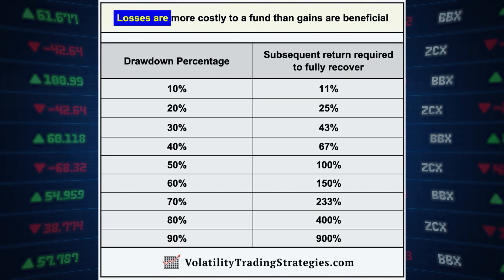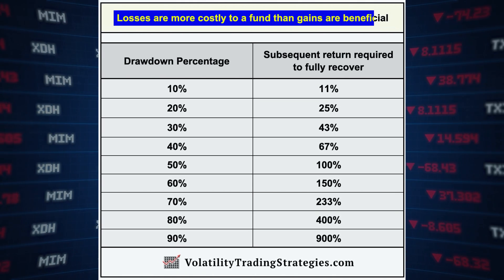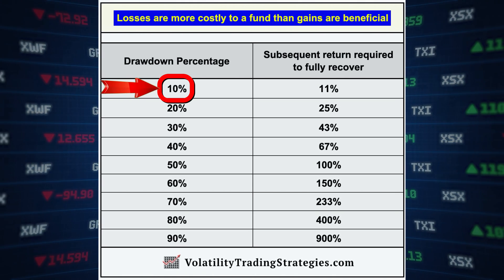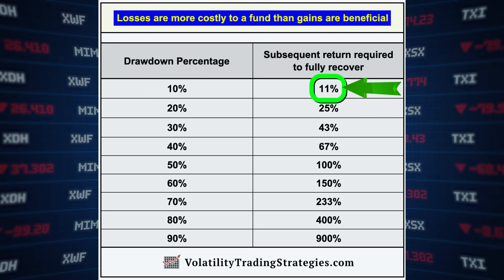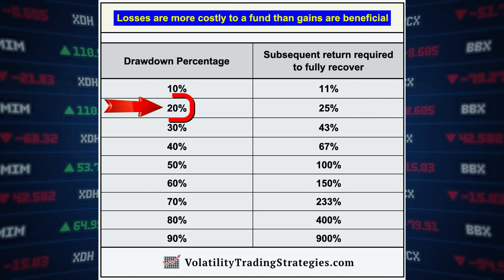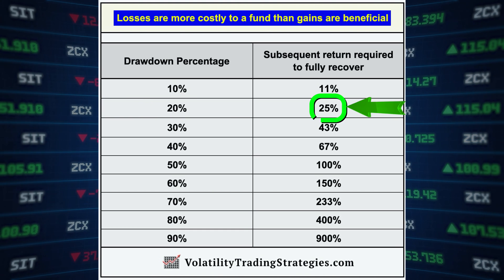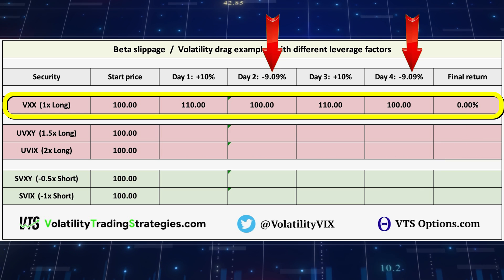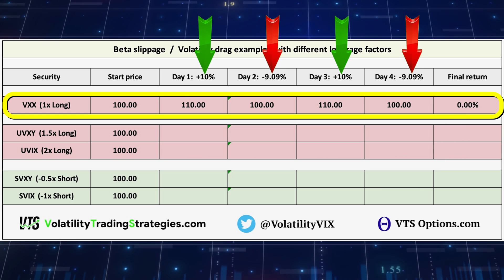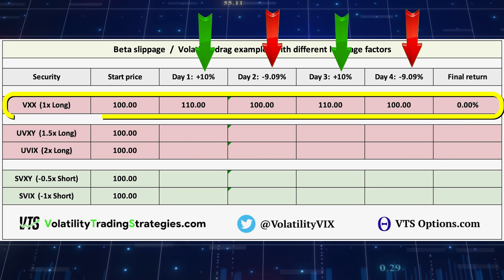If you're wondering why I'm not saying up 10% and then down an equal 10%, that's because of the mathematical drag — losses are always more costly than gains are beneficial. If you take a 10% loss, it takes more than a 10% gain to get back to break even — it actually takes 11%. If you suffer a 20% loss, it takes 25% to get back to break even. To get the non-leveraged baseline VXX breaking even after four days, we use a slightly smaller loss than gain, but with geometric compounding they are the same.